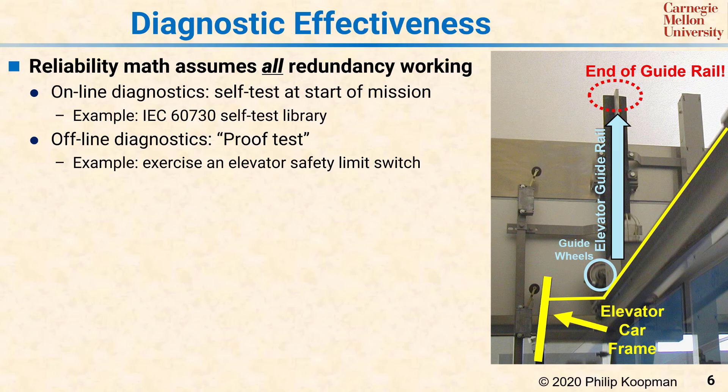In normal operation, this bar—now highlighted in yellow—shoves the top floor position switch to one side, causing the computer to stop the elevator at that top floor. However, that switch will eventually break, and we want to have redundancy to avoid overrunning the top floor.